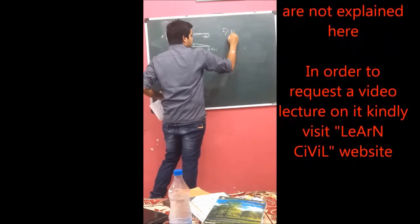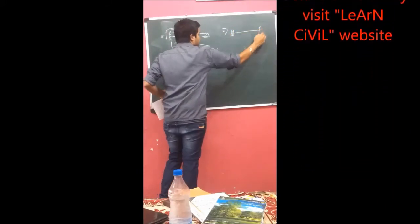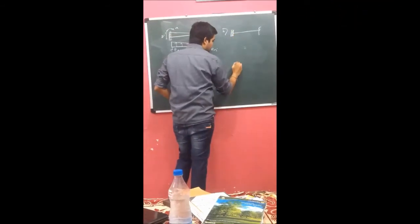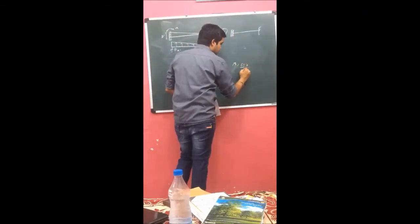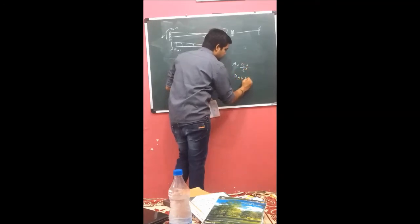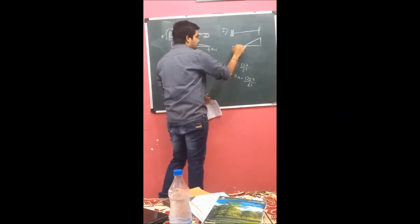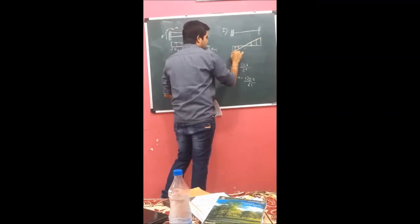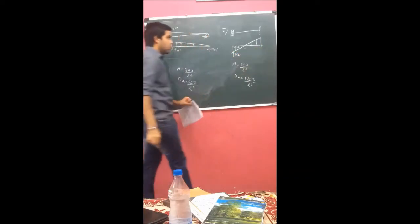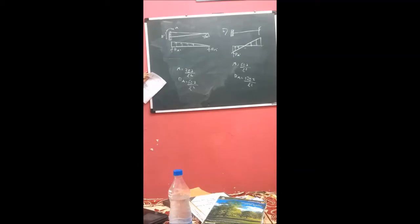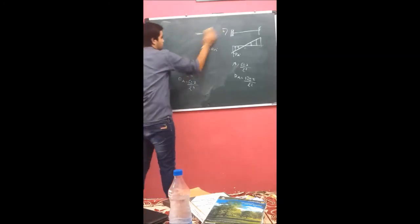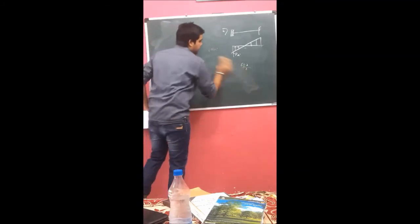The fourth case: when this end is given a unit displacement and the far end is also fixed. In this case the moment comes out to be 6EI/L² and the reaction comes out to be 12EI/L³. The BMD will show moments on both sides — one upward and one below. If you want the detailed derivation of these formulas, you can contact me on the LearnSeveral website. Keep these formulas in mind before starting the stiffness method.